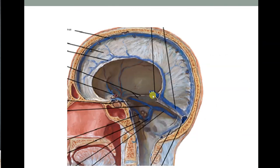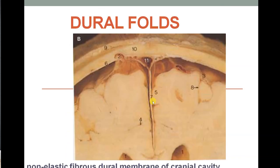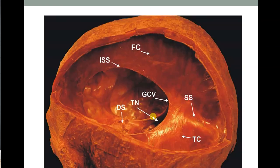To summarize the sinuses: superior sagittal sinus, inferior sagittal sinus, straight sinus, transverse sinus leading to sigmoid sinus; the venous sinus related to falx cerebelli is the occipital sinus. Falx cerebri partitions the two cerebral hemispheres. Inferior sagittal sinus and straight sinus are related to the tentorium cerebelli, the tentorial notch is the free margin of tentorium cerebelli, and this is the diaphragma sellae with the great cerebral vein.